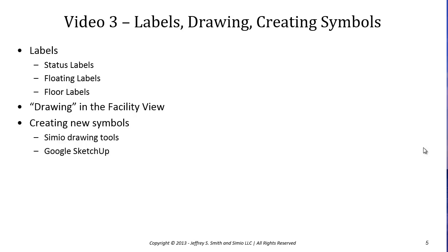In the third video in this module we'll finish up our focus on animation with some miscellaneous topics including labels, which we've already seen using status labels a couple of times. We'll also discuss floating labels and floor labels, then demonstrate drawing in the facility view, how to use semi-drawing tools to add things to the facility view. Finally we'll finish up by looking at how to create new symbols using Simio drawing tools and Google SketchUp to make complex 3D objects and import those into Simio.